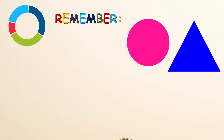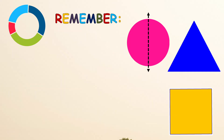Look at these shapes — the circle, the triangle, and the square. Can we divide these shapes equally into two equal parts? Look at the circle — we can divide it in the middle. Even the triangle and even the square. We can also divide it this way, and there are other possible ways to divide the square and the circle. Children, this is what we call symmetry.